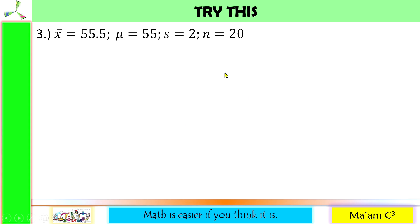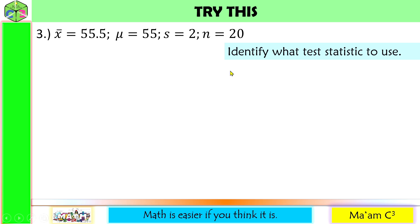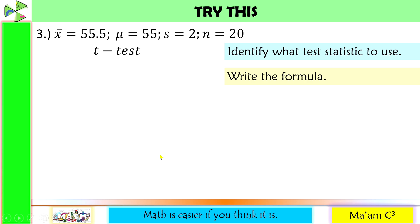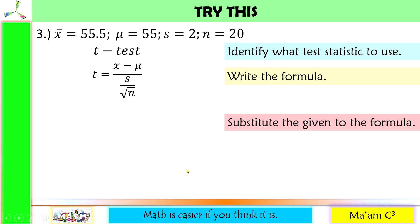Let's have another one. Sample mean is 55.5, population mean is 55, sample standard deviation is 2, and the sample size is 20. Step 1: since we have sample standard deviation and our sample is less than 30, we are going to use T-test. Step 2: write the formula. Step 3: substitute the given to the formula and solve.